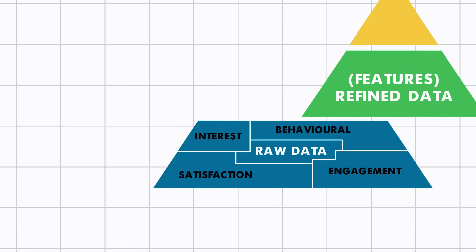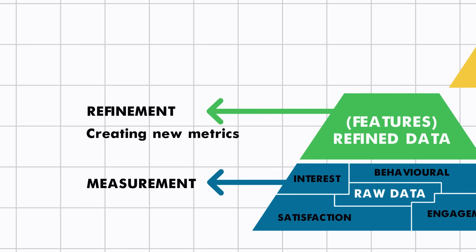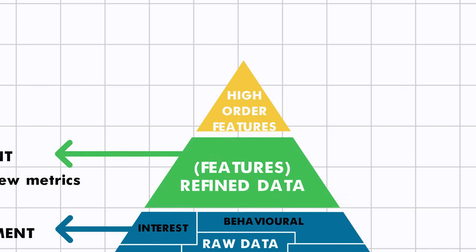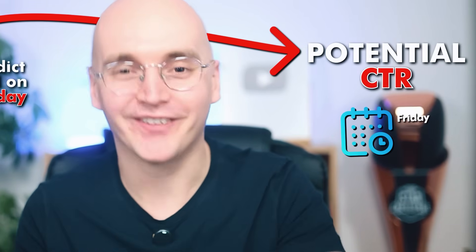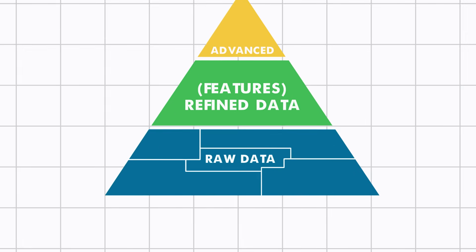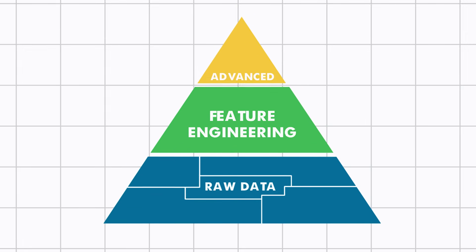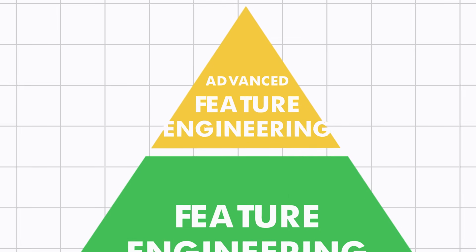Raw data is about measurement; the second level is about refinement and creating new metrics that YouTube could utilize. At the tip of this pyramid is a third level of data, where we can create even more metrics from the refined ones — for example, predicting CTR based on the time of day to get a potential CTR on a Friday. If we name these levels: the base is raw data, the second is feature engineering, and the most complex is advanced feature engineering. It's a great way to think in these three levels.